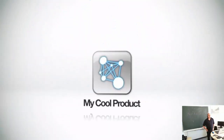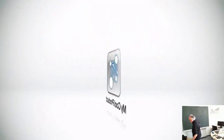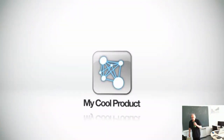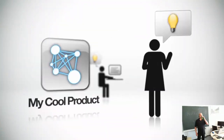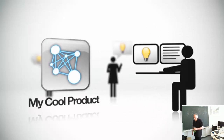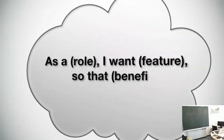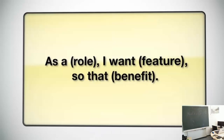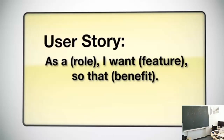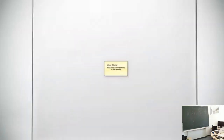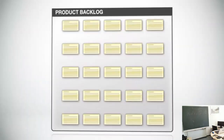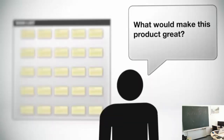Let's say this is the product we want to build. For this product, we get all kinds of feature requests from customers, executives, or even other team members. In Scrum, features are written from the perspective of the end user. Therefore, features are known as user stories. The collection of all these user stories is called the product backlog — think of it as a wish list of all the things that would make this product great.